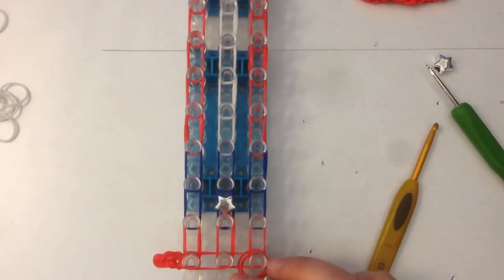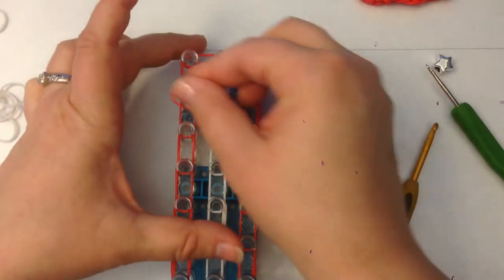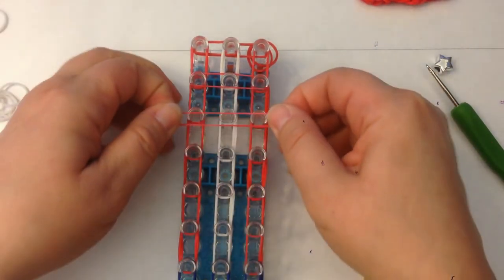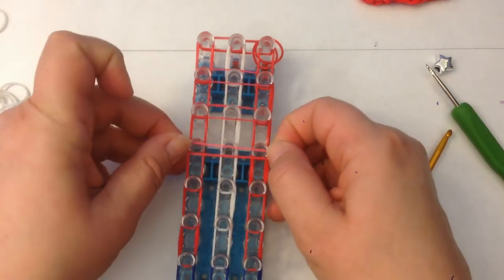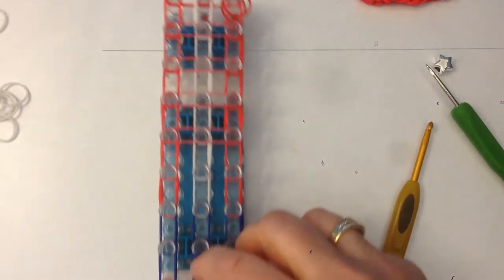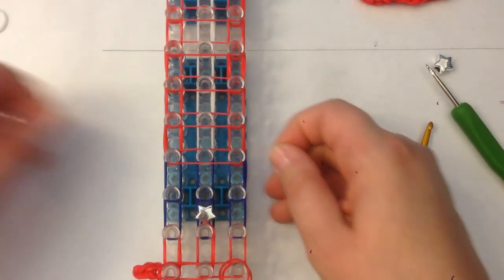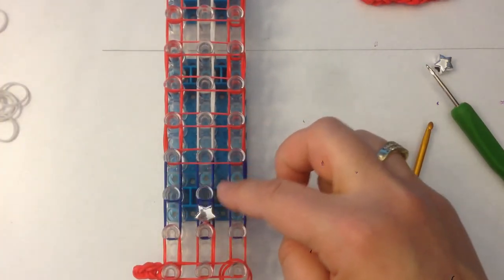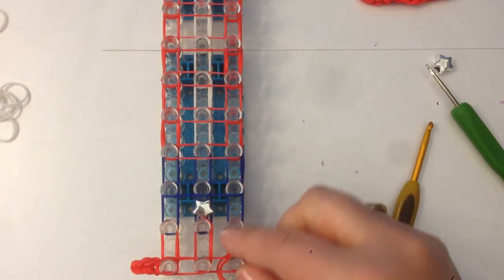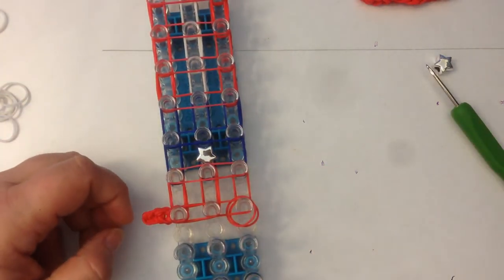Now we need to do some crossover bands. I'm choosing red because red is going to be my outside colour here. I'm taking a single band and stretching it across. When you get to this one, you can choose a blue crossover band and then red again.